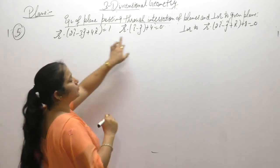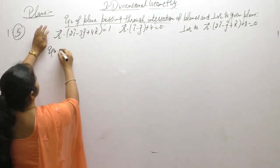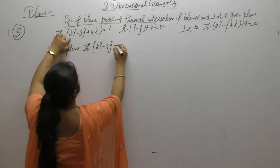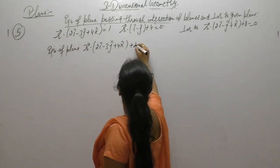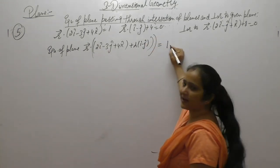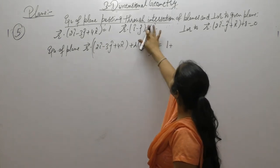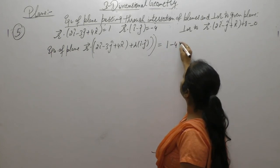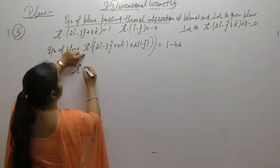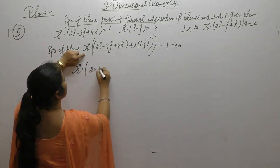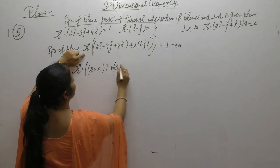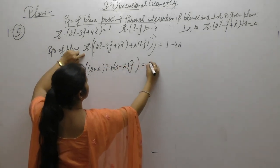The equation of the plane passing through the intersection of these planes in vector form is R dot (n1 plus lambda·n2) equals d1 plus lambda·d2. Substituting the normal vectors, we get R vector dot [(2 plus lambda) i-cap plus (minus 3 minus lambda) j-cap plus (4 plus lambda) k-cap] equals 1 minus 3lambda.